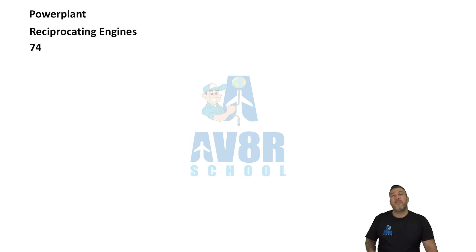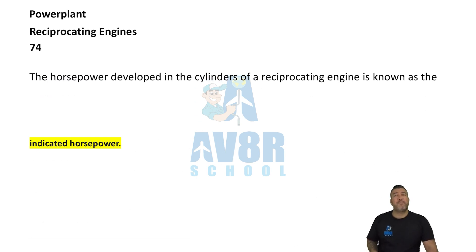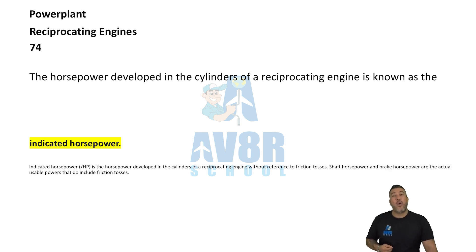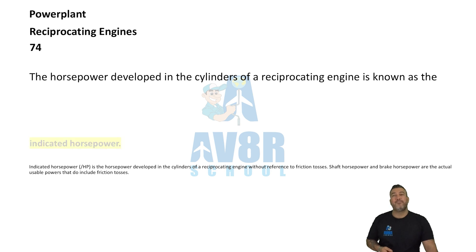Number 74: indicated horsepower. The horsepower developed in the cylinders of a reciprocating engine is known as the indicated horsepower.